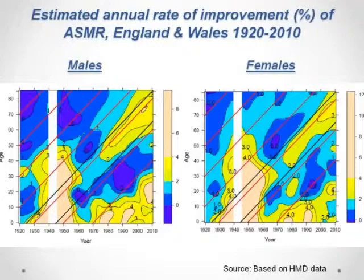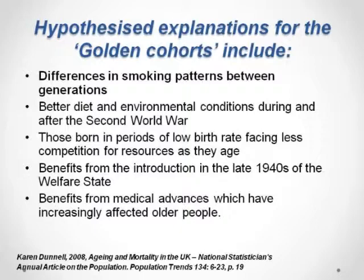These groups are sometimes called the 'golden cohorts' — cohorts who appear to have particularly rapid rates of improvement compared to cohorts on either side of them. There are various explanations for why one might see this effect: smoking patterns, better diet, periods of low birth rate, less competition in the labour force and in education, the welfare state, and medical advances — a range of reasons which might account for this.